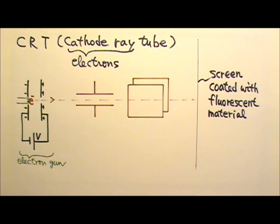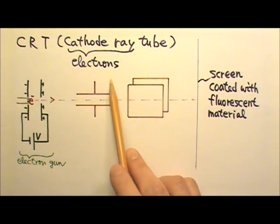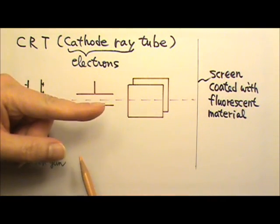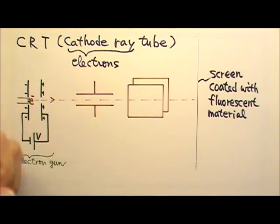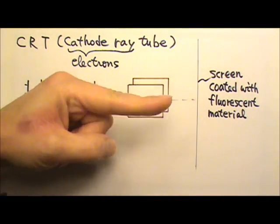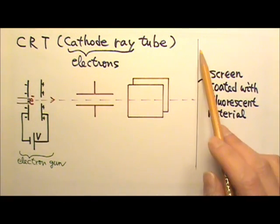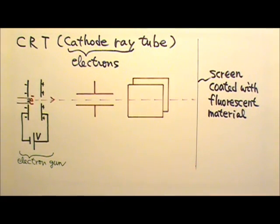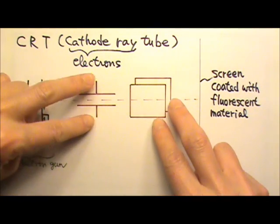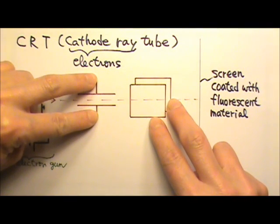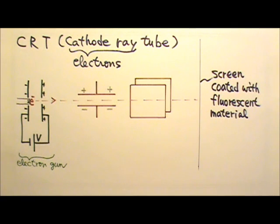To make things more interesting, we can add a set of parallel plates here to deflect the electrons up and down, and another set of parallel plates here to deflect the electrons sideways so they can hit different parts of the screen. To deflect the electron beam, we would connect each set of plates to a voltage and charge up the plates.